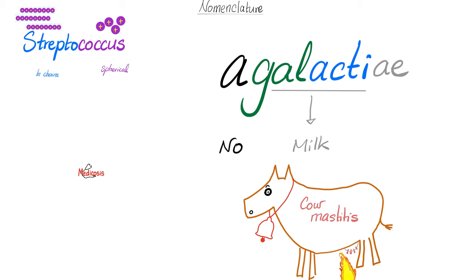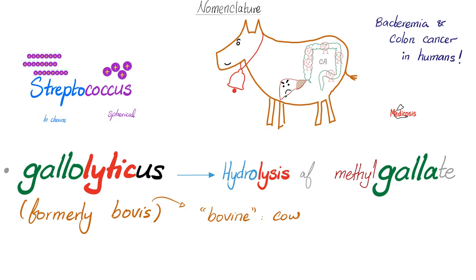Streptococcus agalactiae — 'a' means no, 'galacti' from galactose, meaning milk. Streptococcus agalactiae causes cow mastitis, inflammation of the udder of the cow, so the cow secretes no milk. Streptococcus bovis — they called it bovis because bovine, then changed the name to gallolyticus because it causes lysis of methyl gallate. In humans, Streptococcus gallolyticus or bovis can cause bacteremia and colon cancer or any GI cancer — very important for your exam.